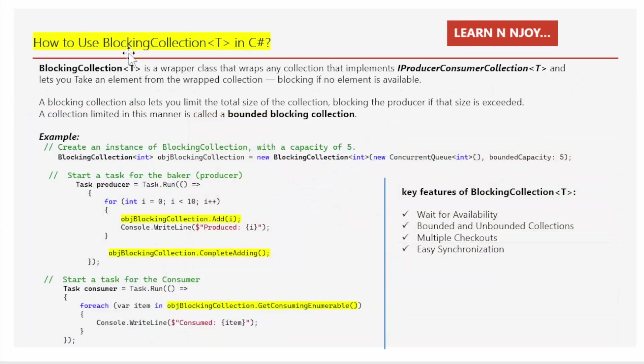How to use BlockingCollection<T> in C#. Before we delve into how to use BlockingCollection<T>, it's important to first understand what it is. BlockingCollection<T> is a wrapper class that wraps any collection implementing the IProducerConsumerCollection<T> interface, and it lets you take an element from the wrapped collection, blocking if no element is available.